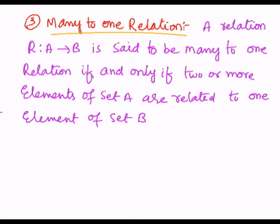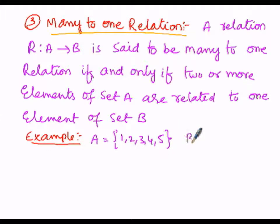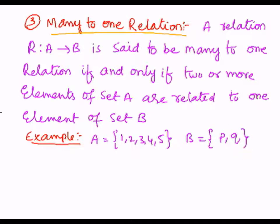Let us illustrate this with an example. We consider set A with elements 1, 2, 3, 4, 5 — five elements of set A — and set B with elements P and Q. This is set A and this is set B.